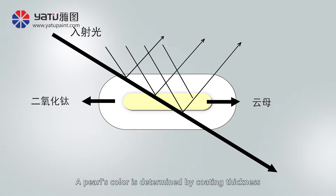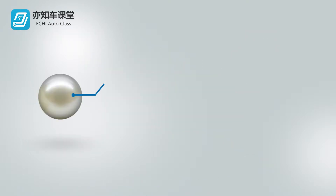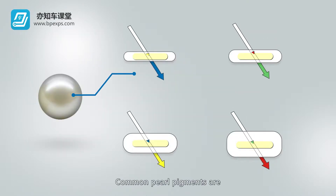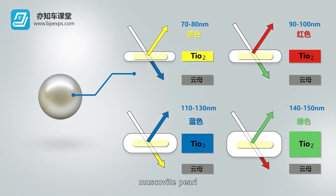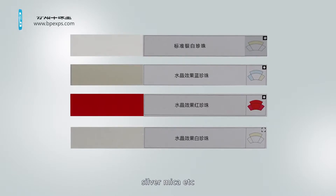A pearl's color is determined by coating thickness and the type of inorganic pigment. Common pearl pigments are muscovite pearl, mica pearl interference, mica, silver mica, etc.